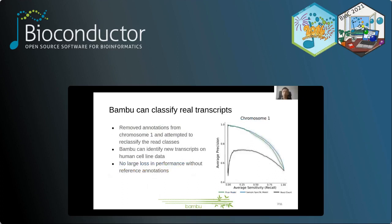We next moved to real data. This is harder because for novel annotations we detect, we can't easily know if they are true full-length transcripts or noise. Instead, we removed all annotations from chromosome 1 and attempted to re-annotate all transcripts on that chromosome. Again, our model in blue greatly outperformed just using read counts alone in black. We also tested one of our pre-trained models trained in a different cell line, and it performed almost equivalently, showing the robustness of our model.